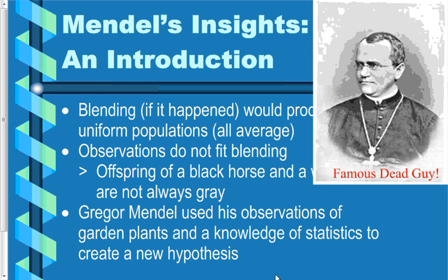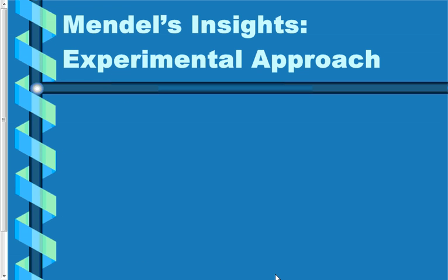As a reminder, a law is not just a really good hypothesis. A law is a description without explanation necessarily included as part of it. We're going to talk about some of Mendel's laws — he didn't have explanations for them, though some of them we do have explanations for today. The way Mendel came about his descriptions and insights was through experimentation.